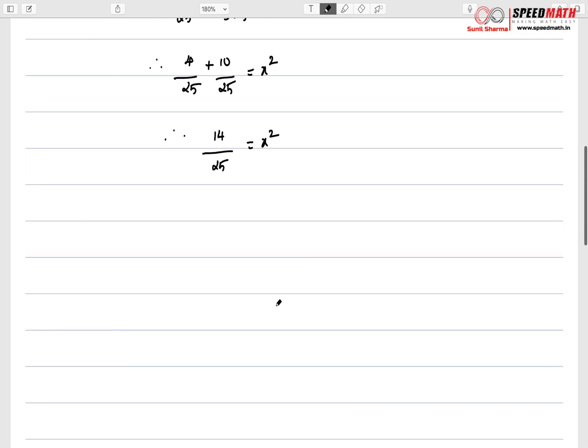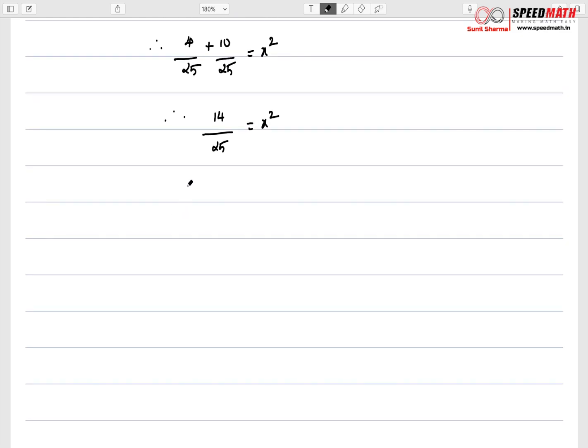So now we can take simple square root. And I'm going to consider only positive value. So let me take x = √14. It's not a perfect square and the denominator 25 is perfect square, so you will get 5. This is the value of x.